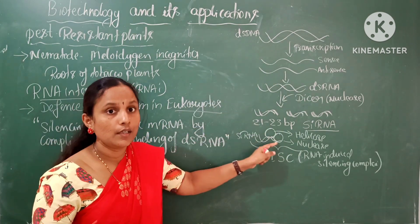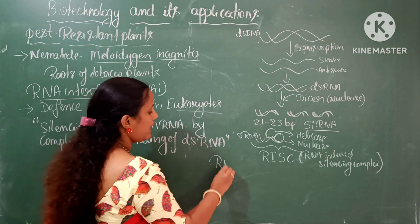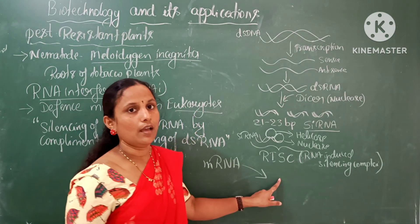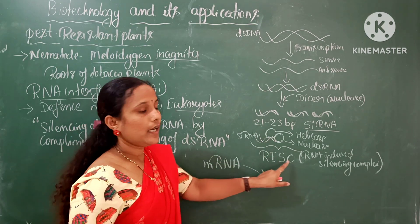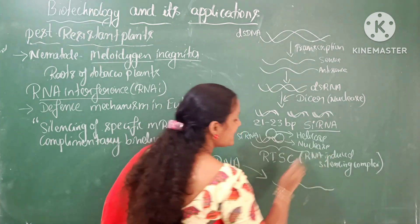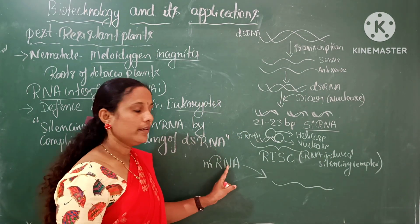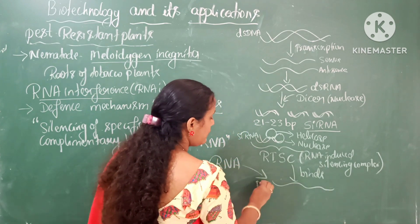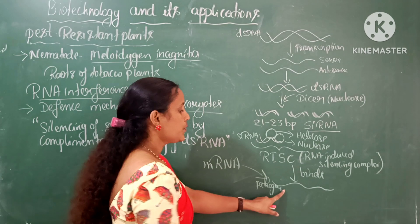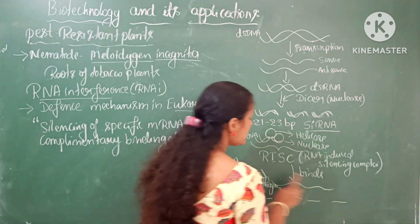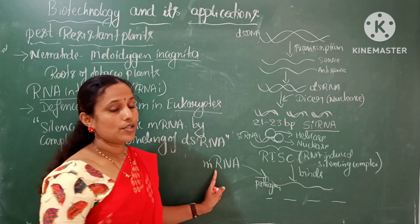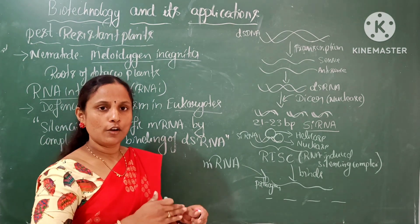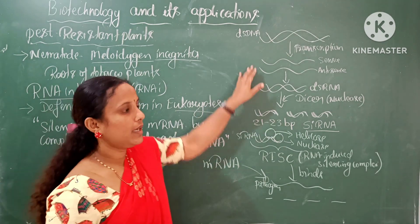This RISC complex is produced in the eukaryotic cell when a specific mRNA — from a pathogen for example — is introduced. The RISC complex binds with the single-stranded mRNA of the pathogen and cuts it into pieces. As a result, protein production for the pathogen is stopped. The pathogen will not divide or establish itself in the eukaryotic cell. This is the normal defense mechanism.